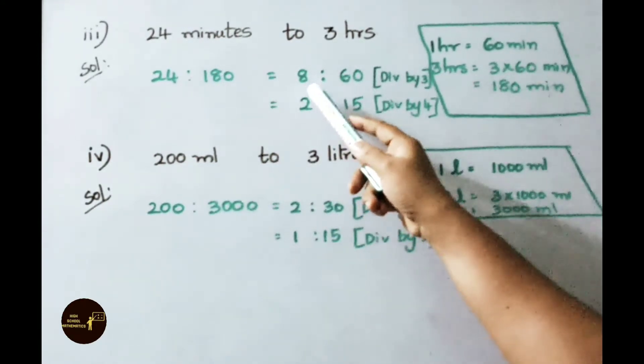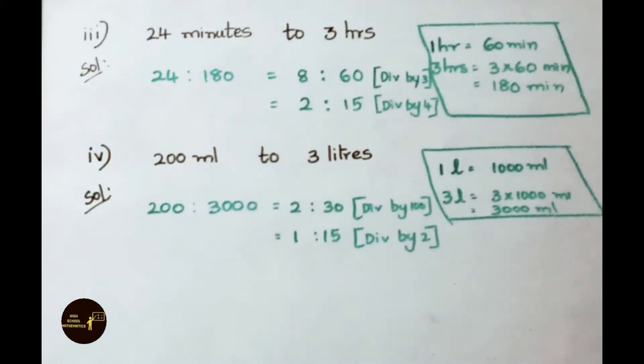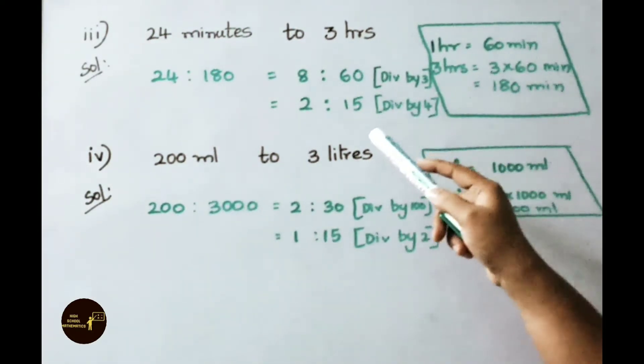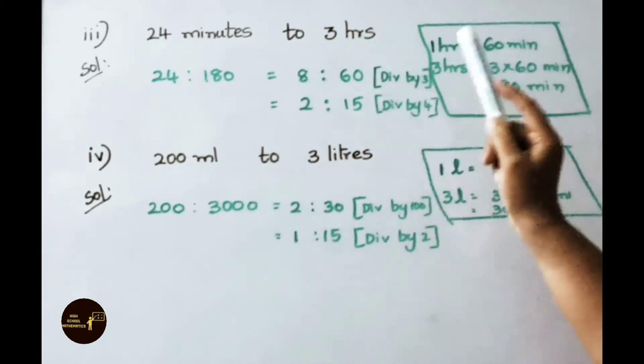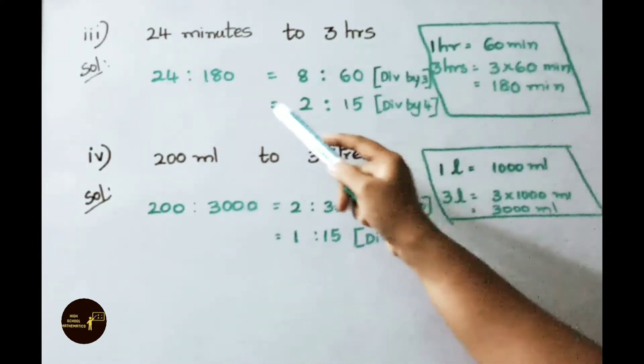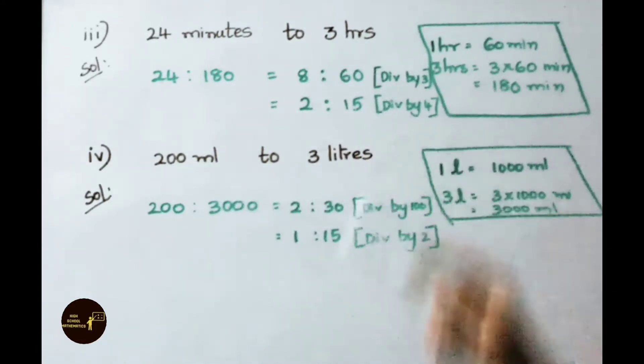Therefore the ratio is 8 is to 60. Now again this ratio can be written in simplest form further by dividing the both terms by 4. Therefore 4 table 8 is 2 times. 4 table 60 is 15 times. So the simplest form of the given ratio is 2 is to 15.